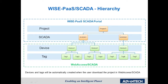In WISE-PaaS, you may have one or several projects. Each project contains at least one SCADA node, and a SCADA node contains at least one device node, with several tags within a device. Devices and tags will be automatically created in the WISE-PaaS platform when users configure the WISE-PaaS connection settings and download the project in WebAccess SCADA.